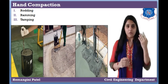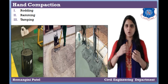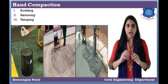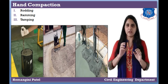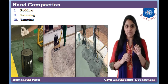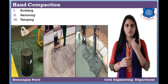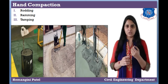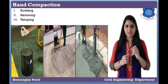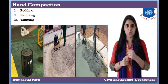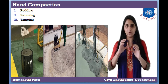Let's start one by one. First is hand compaction. In hand compaction, there are three methods: rodding, ramming, and tamping. What is rodding? That is nothing but the poking of the concrete by using the rod. Rod diameter is 16 mm and 2 feet in length. But there are limitations that we can use it only up to 50 to 20 cm depth.